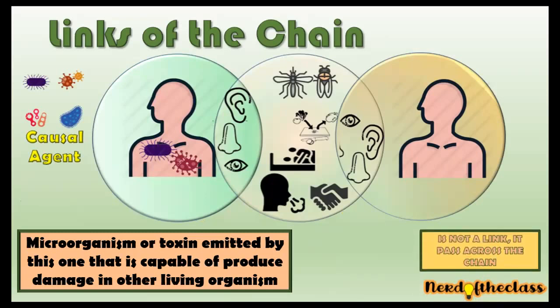The causal agent is not a link itself. It moves across the links — it moves through the chain, going from one link to another. The causal agent goes from the source, from the portal of exit, to the mode of transmission, and from the mode of transmission, through the portal of exit, to the susceptible host.